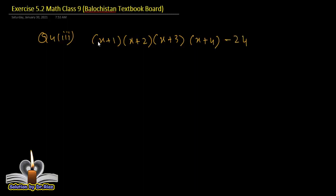یہ ذرا different ہے۔ اس type میں ہم نے یہ check کرنا ہے کہ x کے ساتھ جو number plus ہو رہا ہے، یہاں پر 1، 2، اگلے میں 3، اور اگلے میں 4 ہے۔ تو ان دو factors کو آپس میں ملا لیں جن کا sum آپس میں برابر ہوں۔